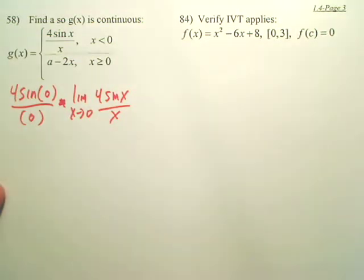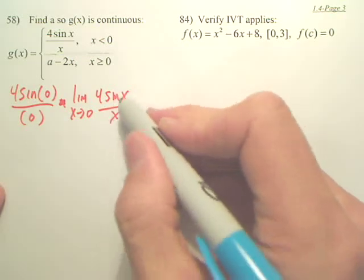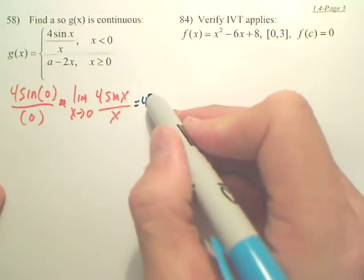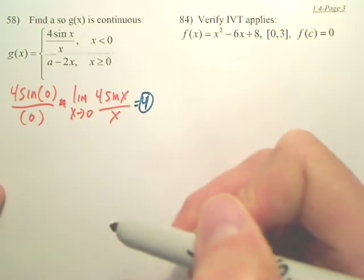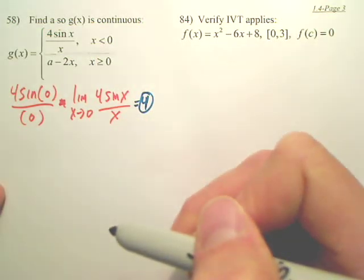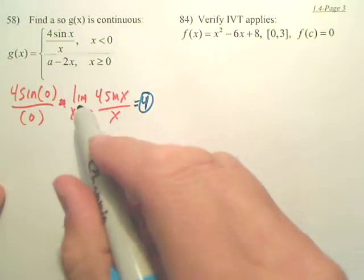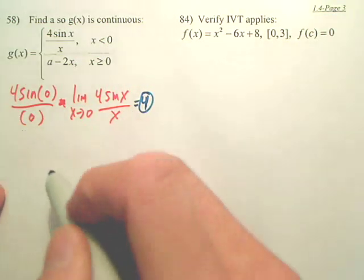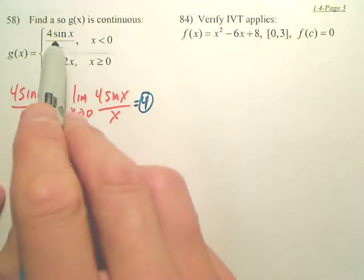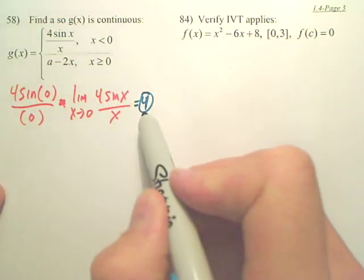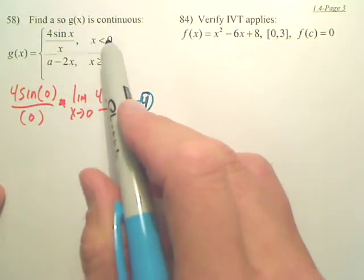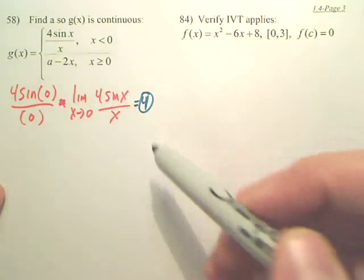Yeah, we can — kind of tricky, huh? What's that equal? Four. Isn't sine x over x equal to one? Yeah, times four, so isn't that four? That's a tricky one — you wouldn't think about taking the limit to actually find that value because you couldn't actually plug in zero. So basically, this graph is approaching four as x approaches zero.